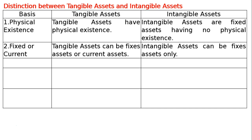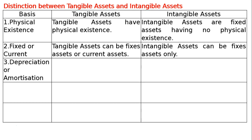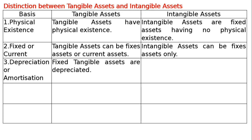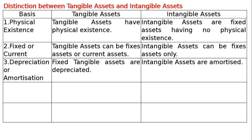The third basis of distinction is depreciation or amortization. In case of tangible assets, fixed tangible assets are only depreciated, whereas in case of intangible assets, intangible assets are amortized.